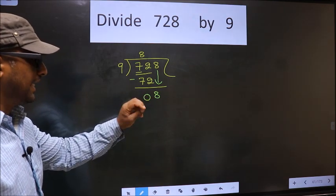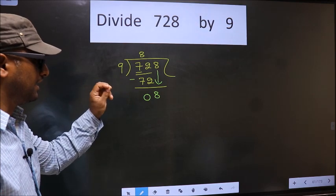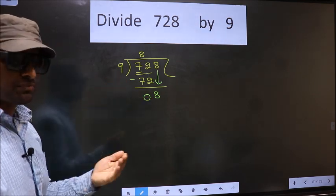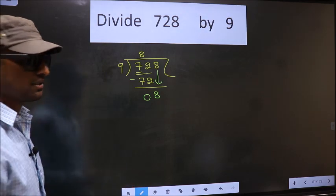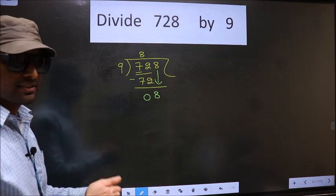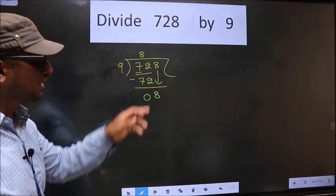Here we have 8. Here 9. 8 is smaller than 9. So, what many do is they put a dot and take 0 here, which is wrong.